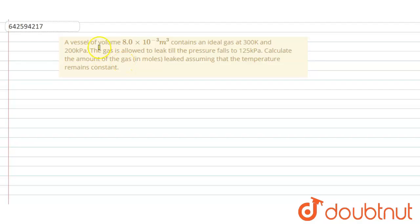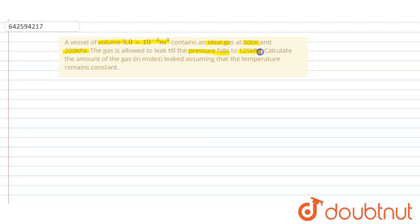Hello everyone. In this question, we are given a vessel of volume 8 × 10⁻³ m³. It contains an ideal gas at 300 Kelvin and 200 kilopascal. If we allow the gas to leak until its pressure falls to 125 kilopascal, we need to find the amount of gas that has leaked, in moles.